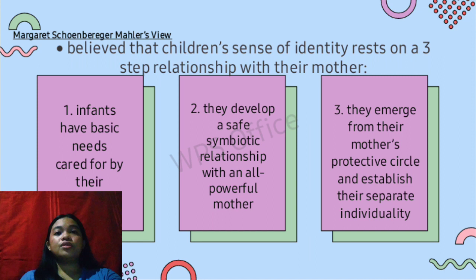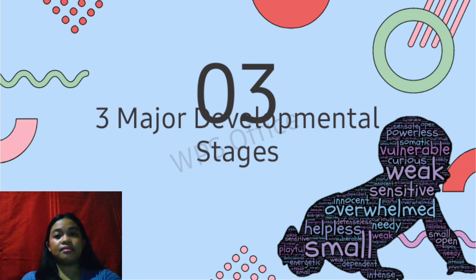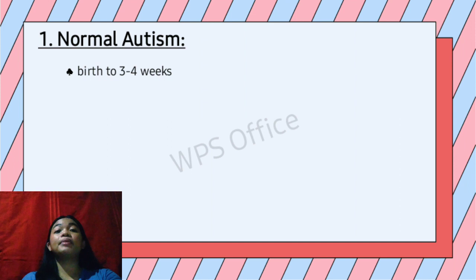Now let's proceed to the three major developmental stages. The first one is normal autism. It is the first major developmental stage, which lasts from birth to three or four weeks of age.